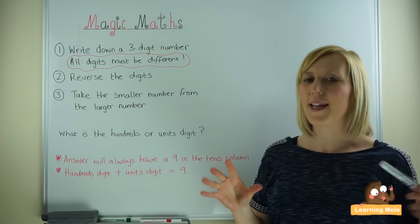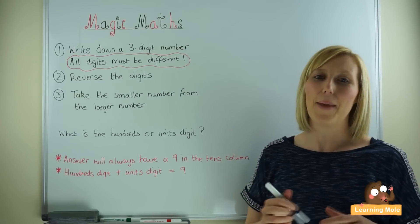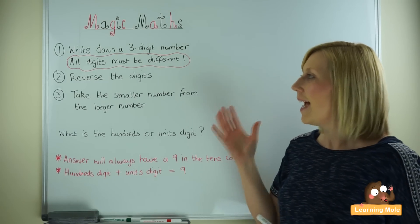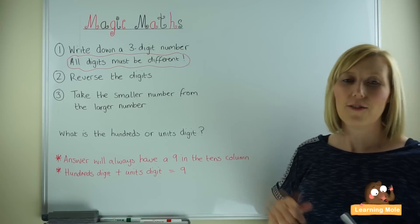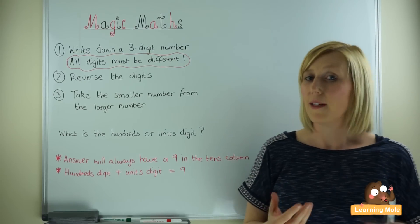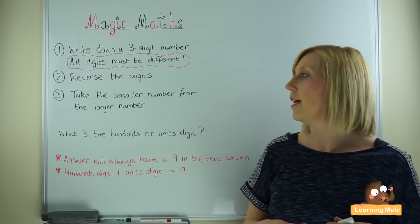The idea of Magic Maths is that we give the children a formula that they can then go around practicing on adults and children and impress them with their mathematical magical skills. They have a range of different formulas and if you watch some of the other videos you'll see other formulas floating around.